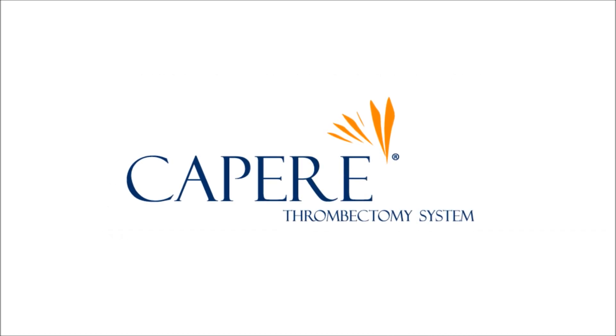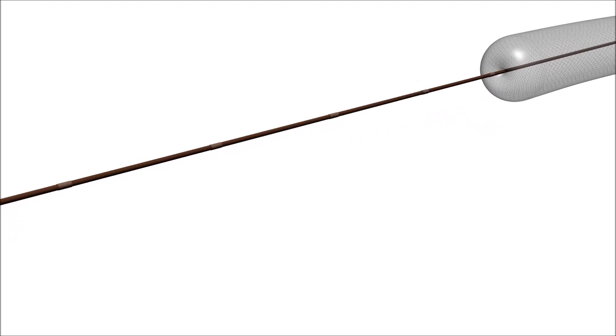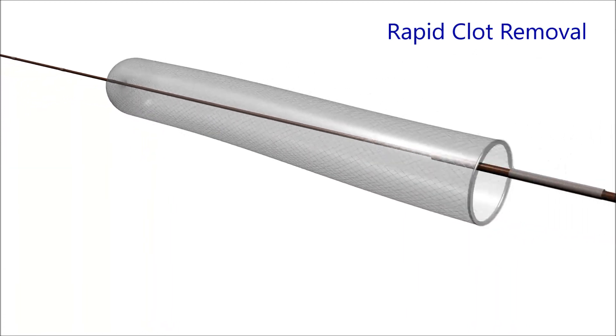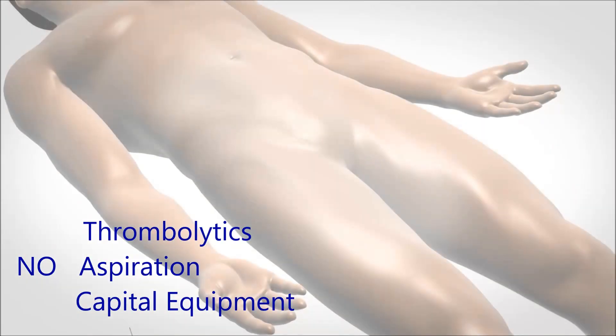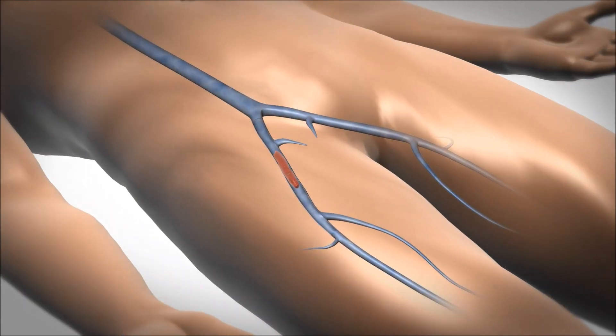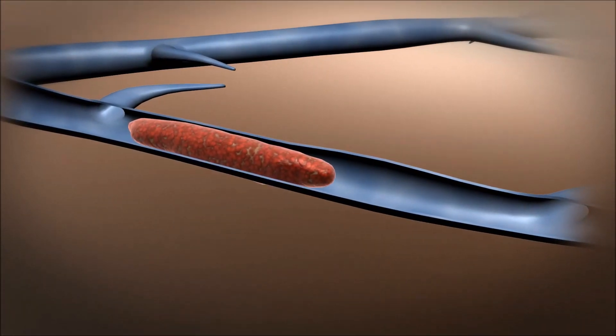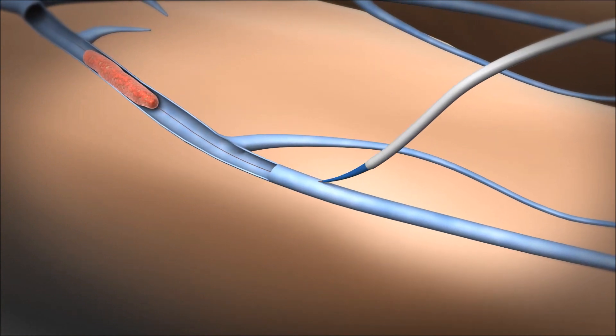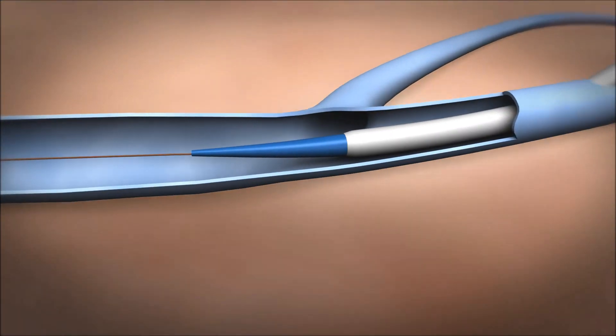The system includes a delivery catheter and funnel catheter with a proprietary dynamic basket lengthening mechanism, designed for rapid clot removal without the need for thrombolytic agents, aspiration, or capital equipment. The system is introduced through the popliteal or femoral vein and inserted percutaneously under angiographic guidance over a 0.014 guide wire through an introducer sheath.